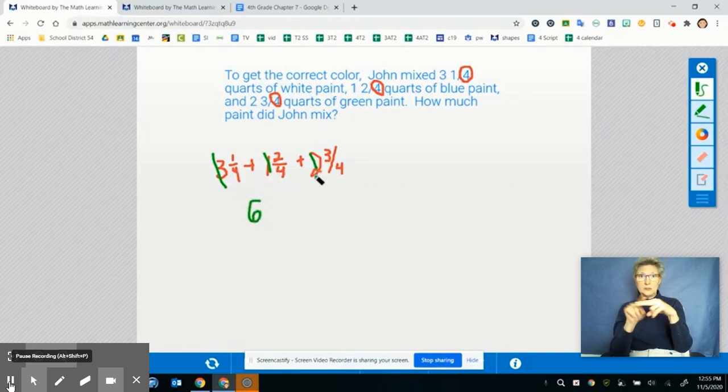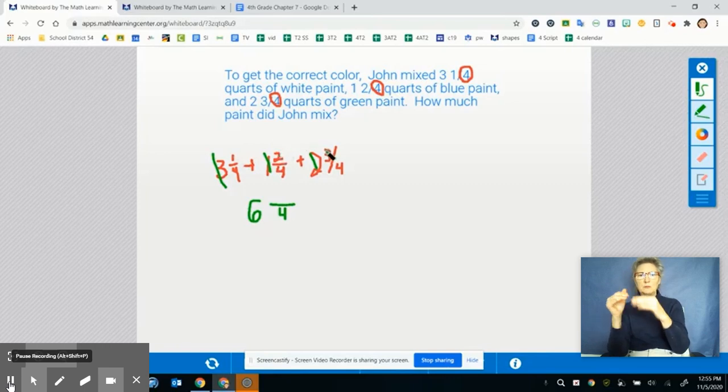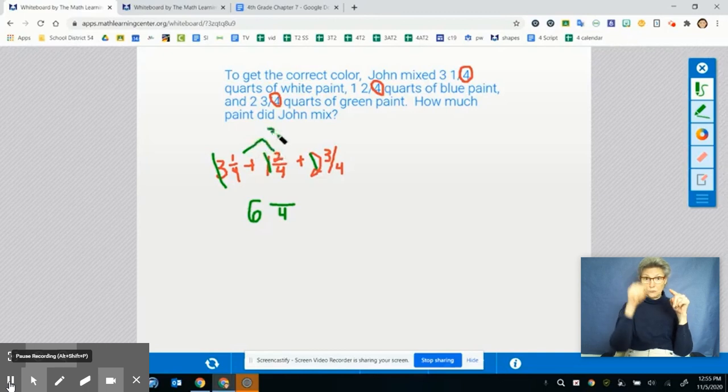And now I have a denominator of four. So I'm going to write my denominator of four. And I'm going to add up my numerators now. So I have one plus two is three, and three plus three is six. So just to show my thinking, I'm going to do one plus two is three, and then three plus three equals six.